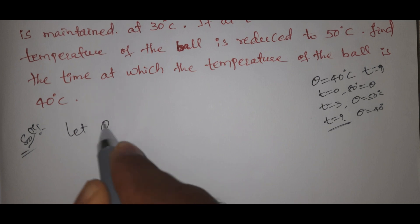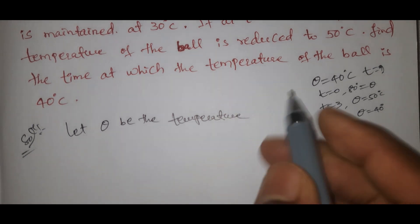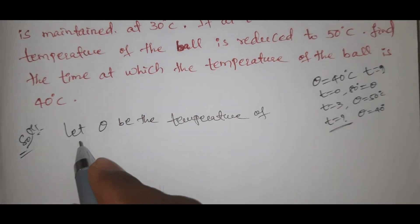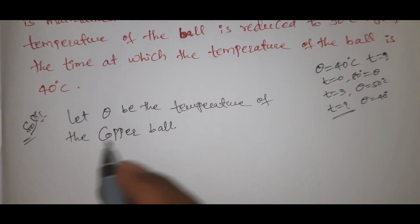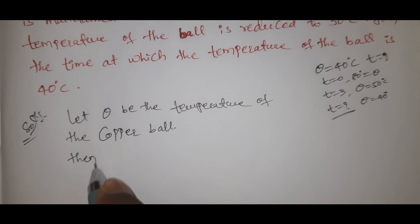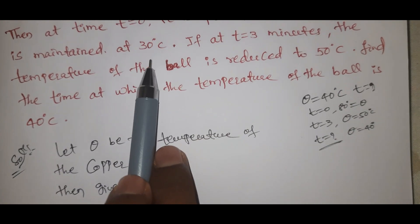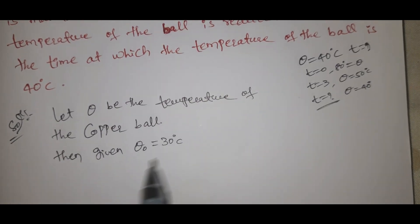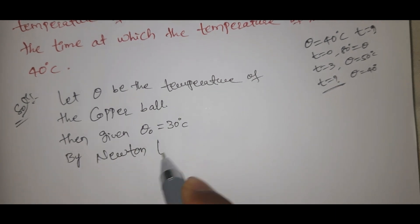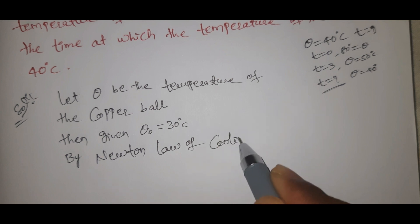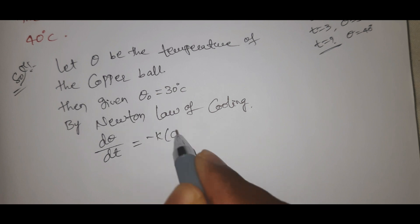Let theta be the temperature of the copper ball. Given theta naught equal to 30 degrees centigrade — the ambient temperature is 30 degrees centigrade. By Newton's law of cooling, d theta by dt equal to minus k into theta minus theta naught.